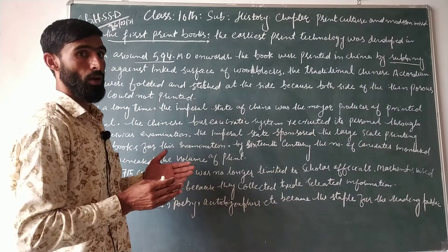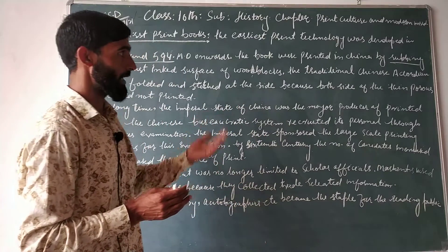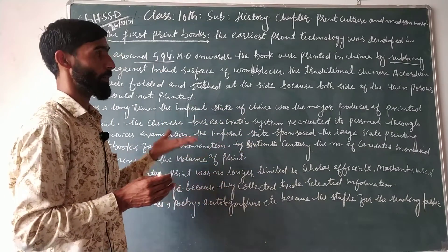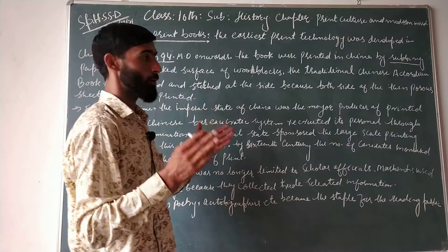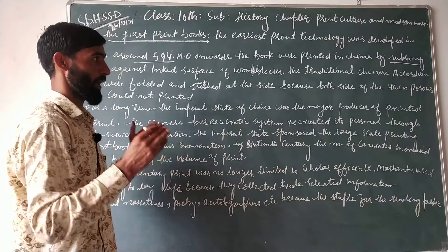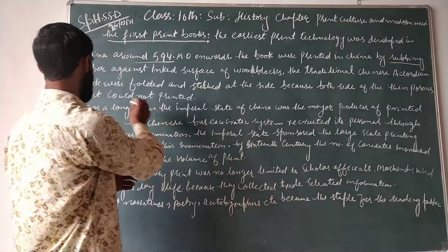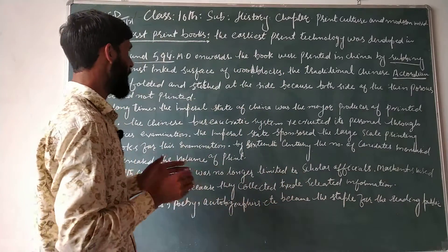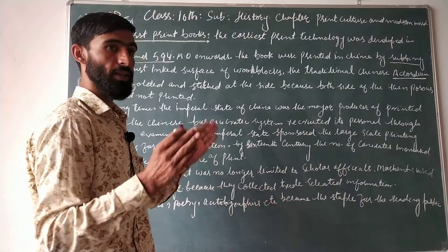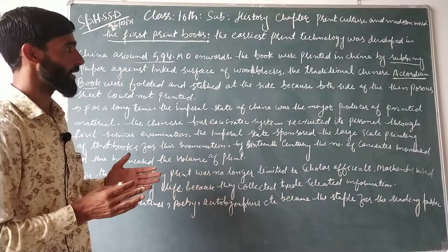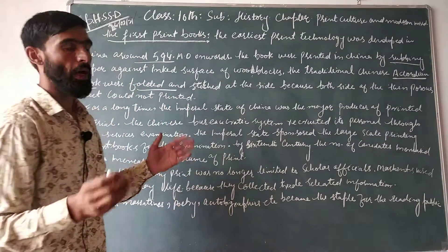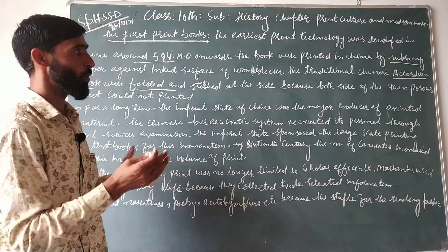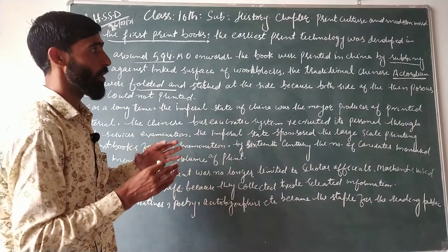Alphabets were carved and ink was applied to them. The wooden block with alphabets was then rubbed onto paper. A book prepared this way was called an accordion book. These books were printed on one side only — if printed on both sides, the letters would mix together.